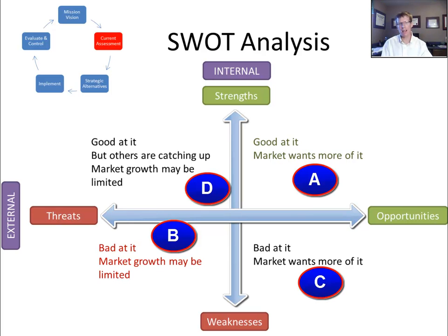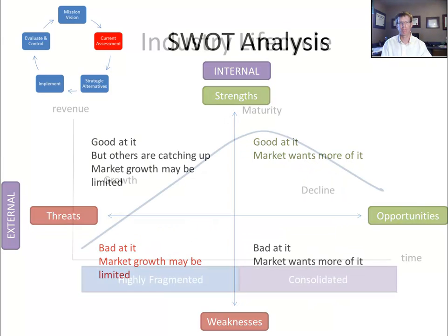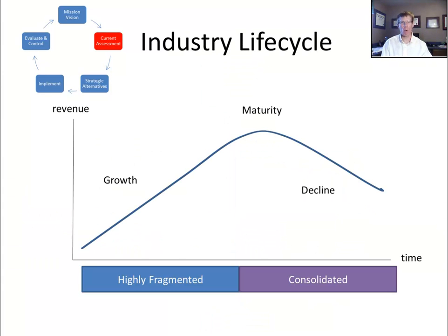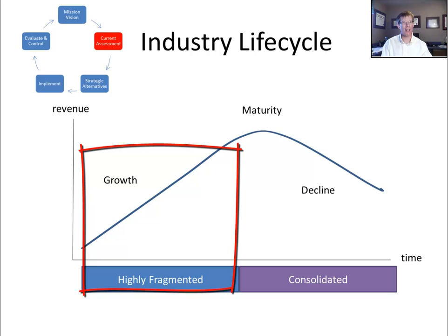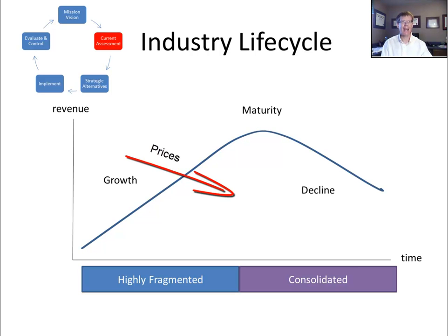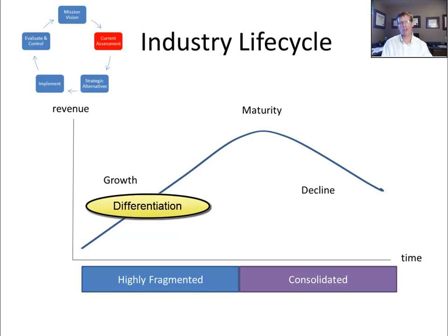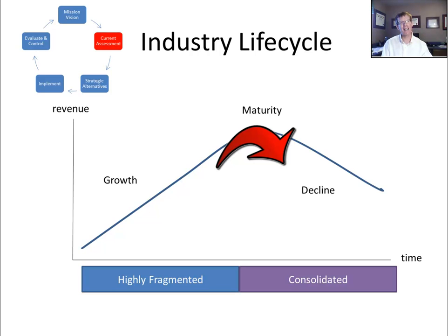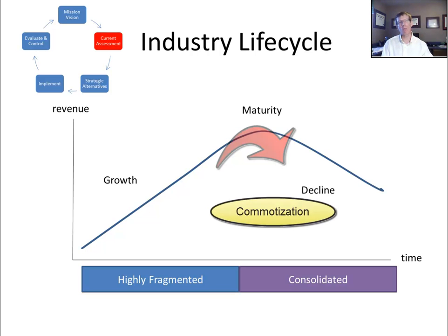The industry life cycle is a useful starting point. It can be used to explain and predict trends that a company will experience as it progresses through the life cycle. In a fragmented industry, no competitor has a large market share. As new competitors enter the market, prices will drop, and companies will rely on the experience curve and economies of scale to grow profitability. Competitors will try to differentiate their products in order to grow their market share. However, as the industry matures, products tend to congregate and become commoditized — that is, less differentiated.